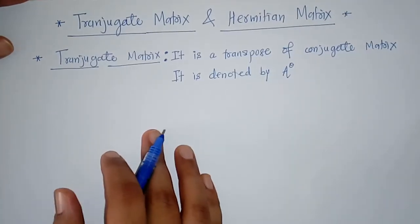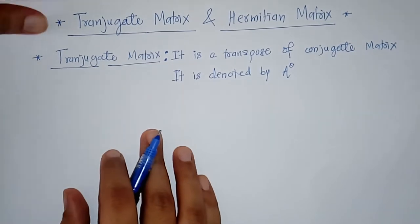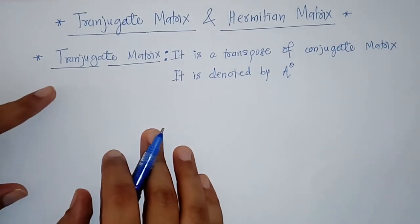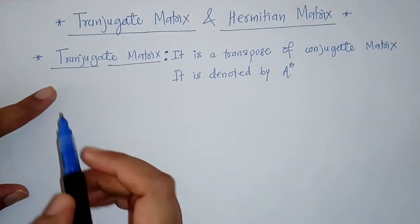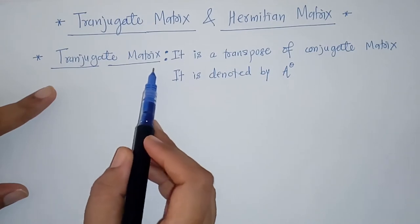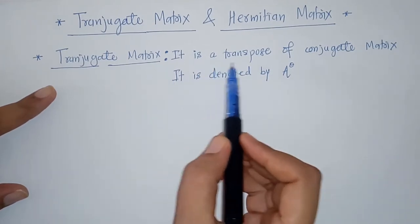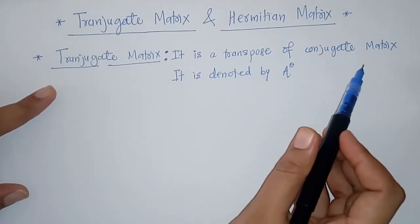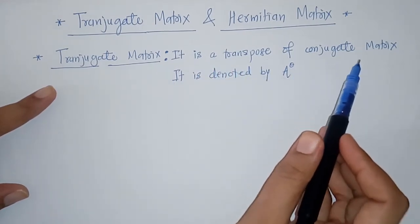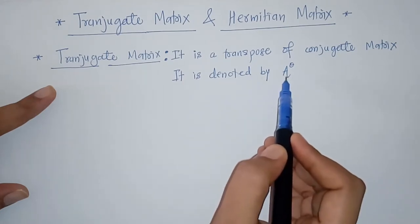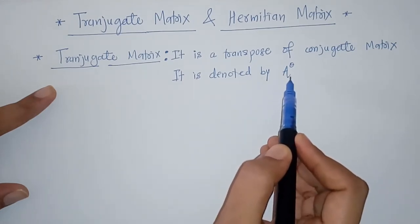Hello everyone. Today we are going to see Transjugate Matrix and Hermitian Matrix. So first we will see Transjugate Matrix. It is a transpose of conjugate matrix. It is denoted by A raised to theta.